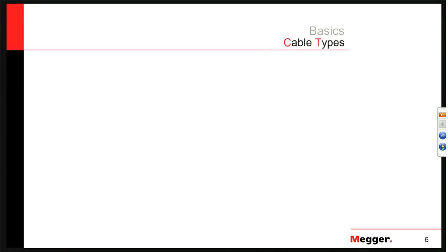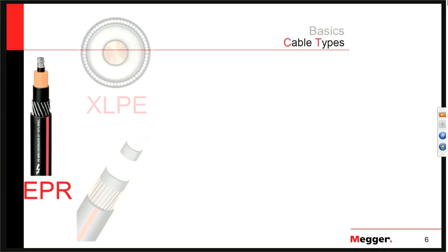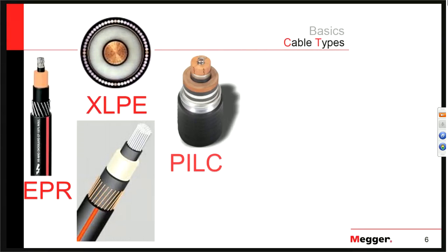What kind of cables are we going to talk about? Most commonly, we'll see EPR, XLPE, or PILC type cables. EPR and XLPE are often lumped together as extruded cables or solid dielectric cables because the bulk insulation material is solid — EPR feels a bit like a pencil eraser, XLPE feels more plastic-y. PILC cable is treated differently because the insulation is paper wrapped around the center conductor and filled with oil.